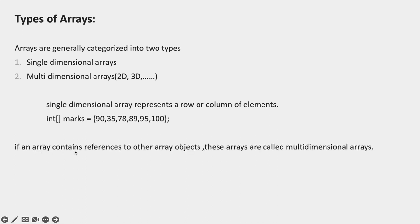If an array contains references to other array objects, these arrays are called multidimensional arrays. That means if an array contains the reference of another object, we can call it a multidimensional array. Two dimensional arrays are commonly known as matrices.